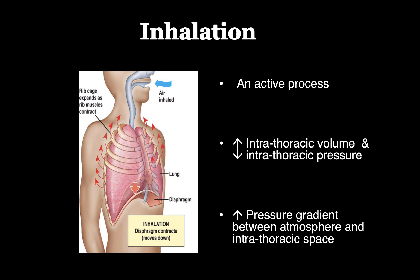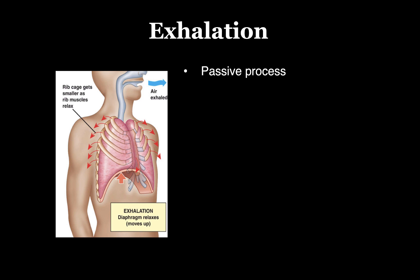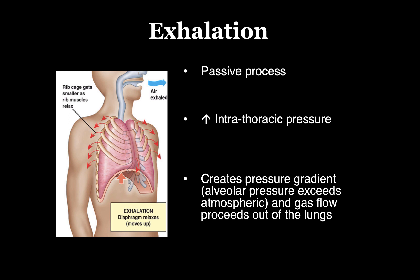Expiration is usually a passive process; however, in patients with obstructive physiology like asthma and COPD, this can be an active process with forced exhalation. Normally in expiration, the diaphragm and intercostal muscles relax, the lung recoils, decreasing intrathoracic volume and subsequently increasing intrathoracic pressure. The pressure in the thorax then rises above atmospheric pressure and there is a net movement of gas from the alveoli to the atmosphere, completing the expiratory phase.